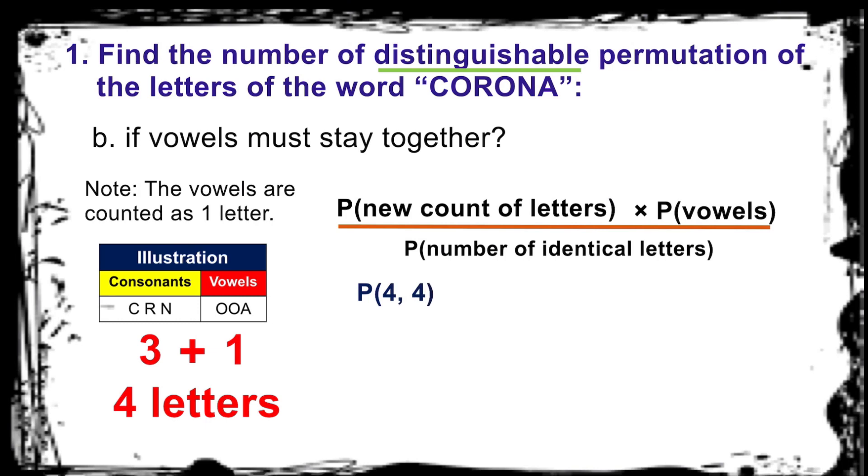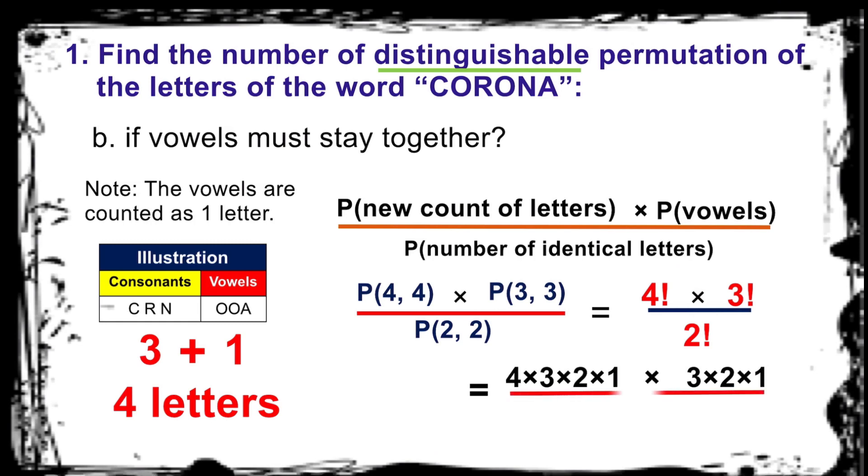Permutation of 4 taken 4 for new count of letters times permutation of 3 taken 3 for the permutation of vowels divided by permutation of 2 taken 2 for identical O's. That's 4 factorial times 3 factorial divided by 2 factorial equals 4 times 3 times 2 times 1 times 3 times 2 times 1 divided by 2 times 1. Cross out, then multiply the remaining numbers equal to 72.